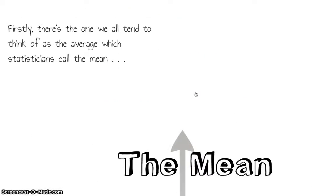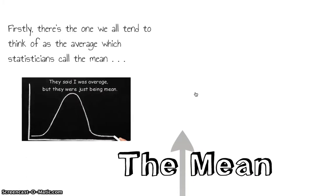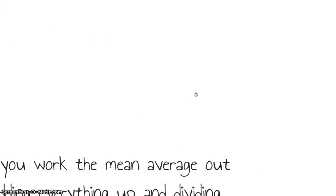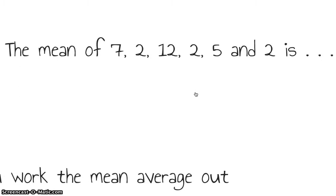There are basically three ways to do this. First of all, there's the mean, and this is the one we tend to think of naturally as an average. So you work a mean average out by adding everything up and dividing what you get by the number of numbers you started with.